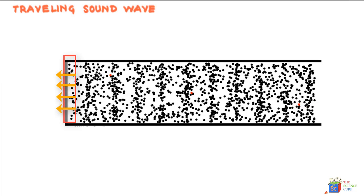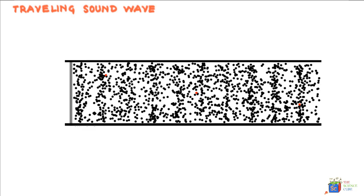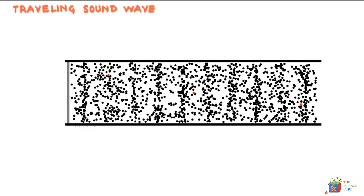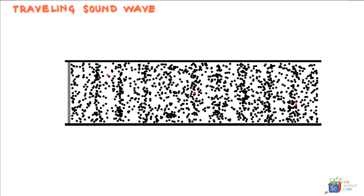These particles then tend to move back towards the piston. And the same chain reaction happens that the particles adjacent to these particles get an opportunity to retreat back to the left.